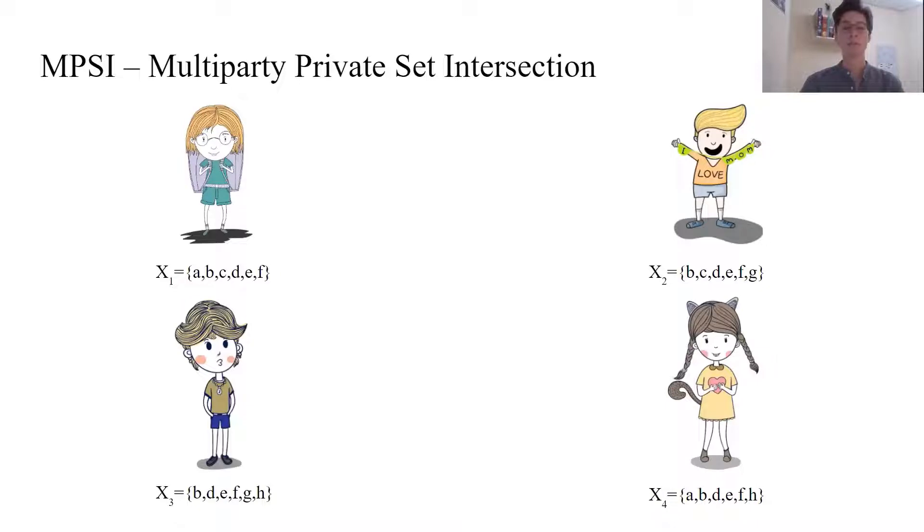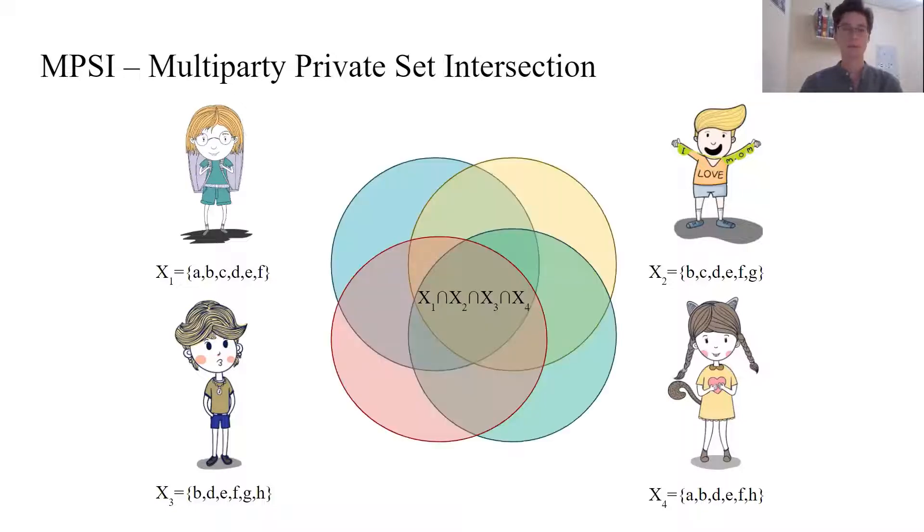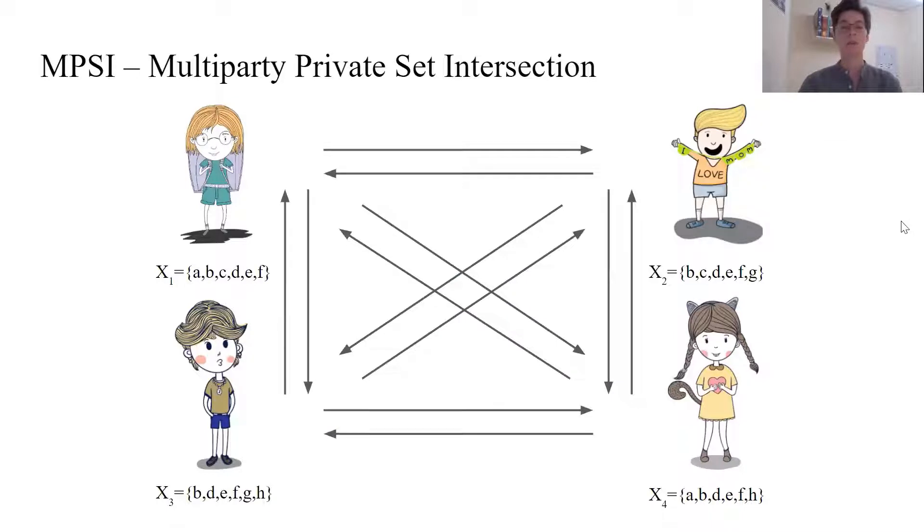Multiparty Private Set Intersection Protocols, or MPSI for short, allow a set of mutually distrustful parties, each holding a private set of items, to jointly compute the intersection of those sets and nothing more. They can run a secure computation protocol, and by the end of it, they learn the intersection, in this case the set BDEF. Any party obtains no information about the elements of other parties or their partial intersections.